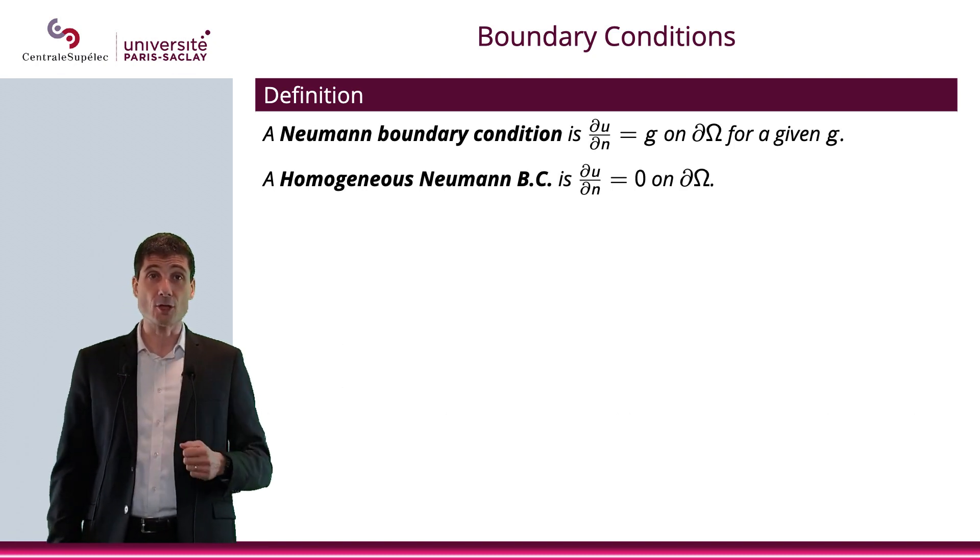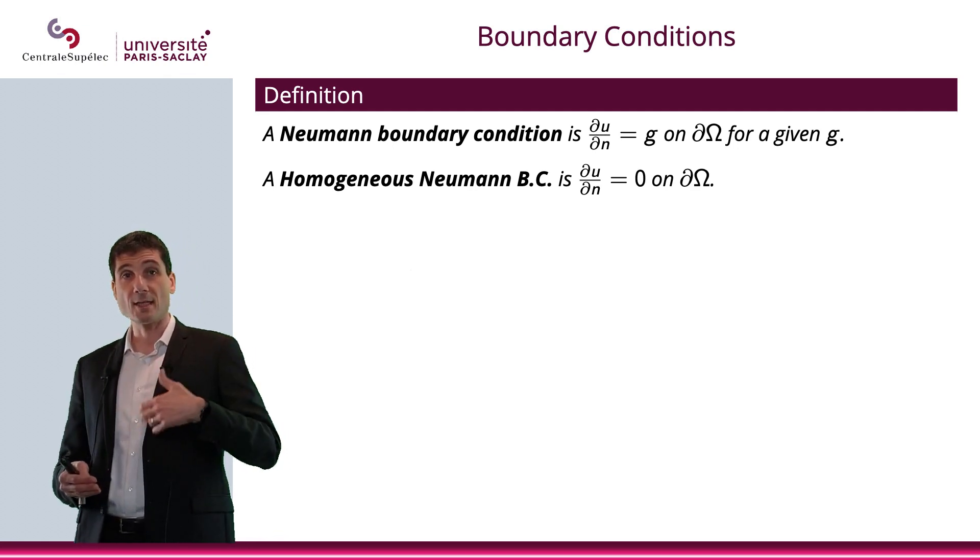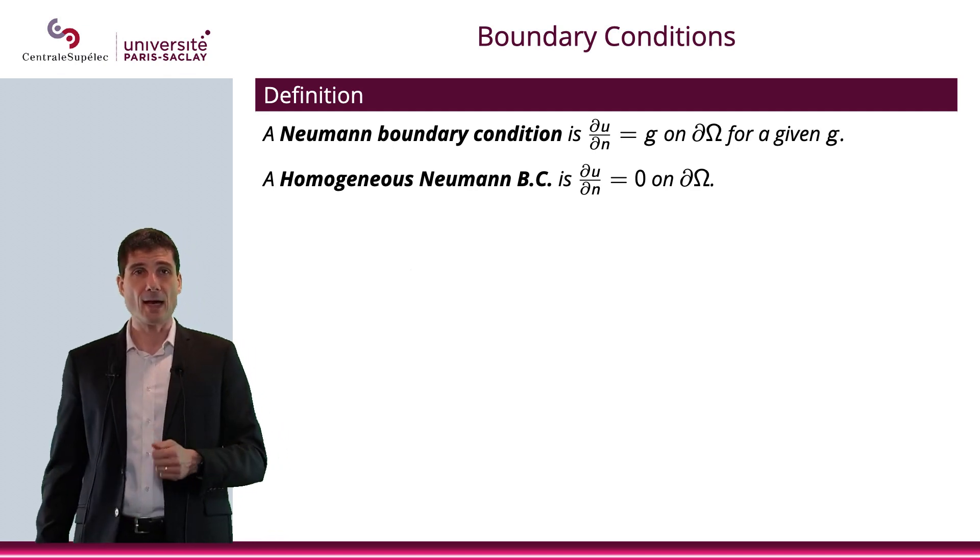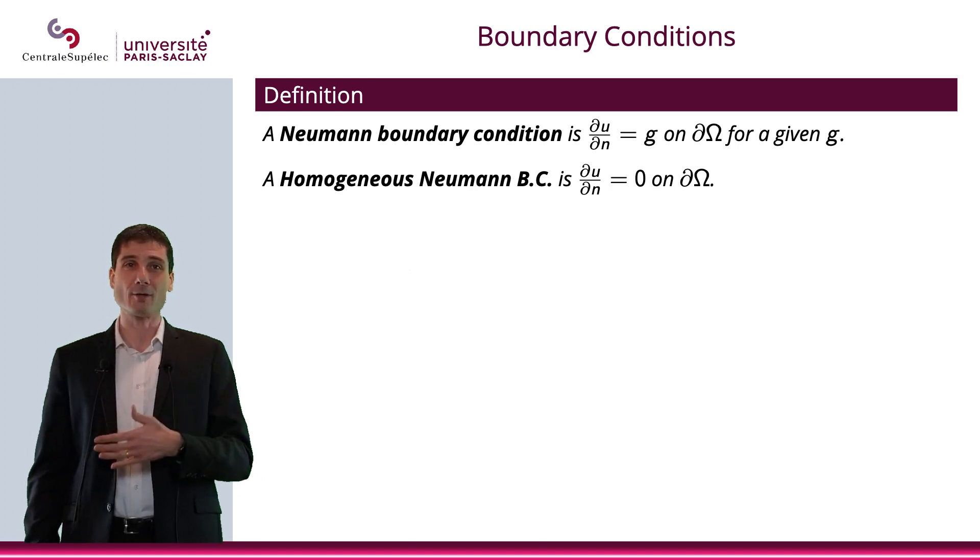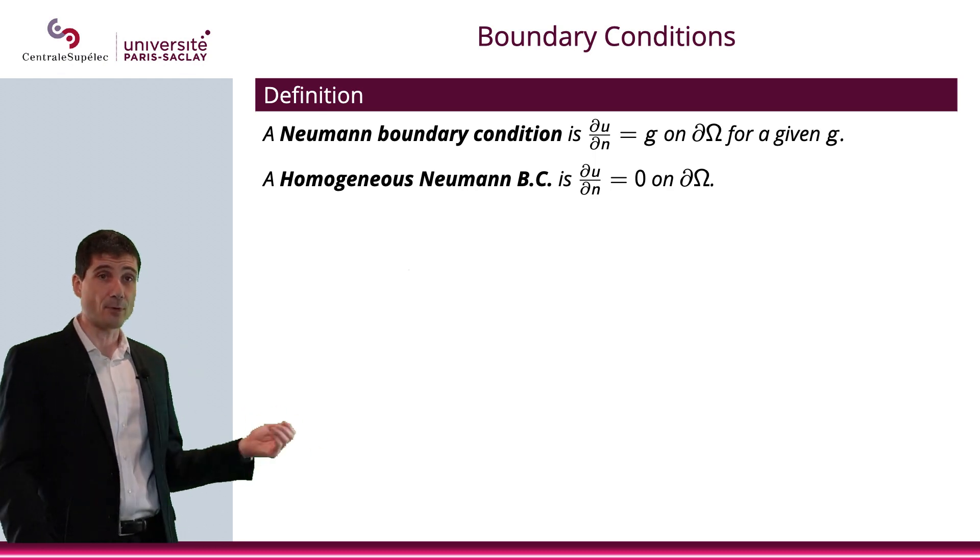We can also have Neumann boundary conditions, and that means that we have the normal derivative of U, which is equal to G on the boundary.